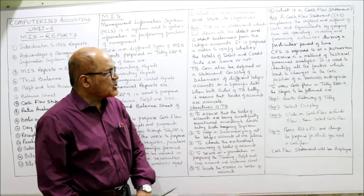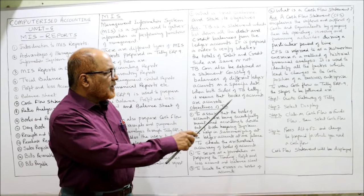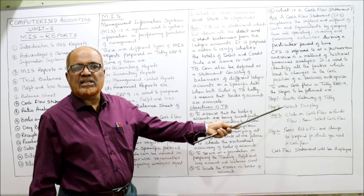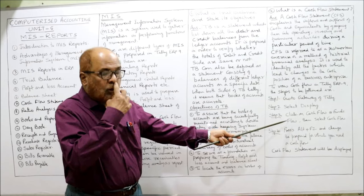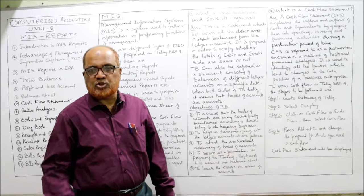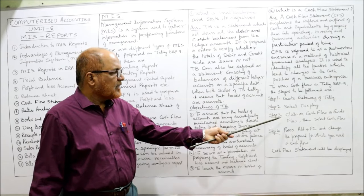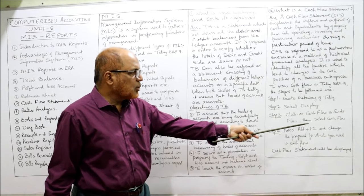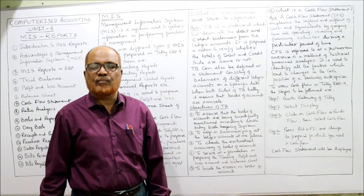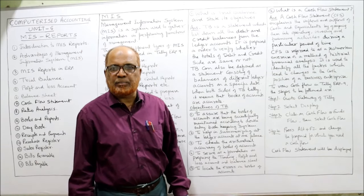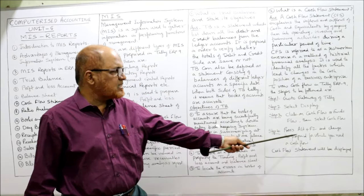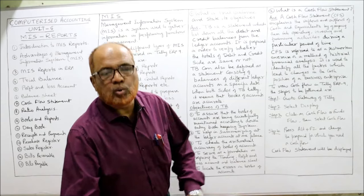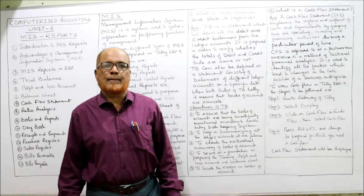To view the cash flow statement in Tally ERP 9, follow these steps: Step 1 — go to Gateway of Tally, then select Display. Step 2 — click on Cash Flow or Funds Flow, then click Cash Flow. Step 3 — press Alt+F2 to change the date and specify the period for which you want the cash flow statement. The cash flow statement will then be displayed. These are the steps to display the cash flow statement in Tally ERP 9.